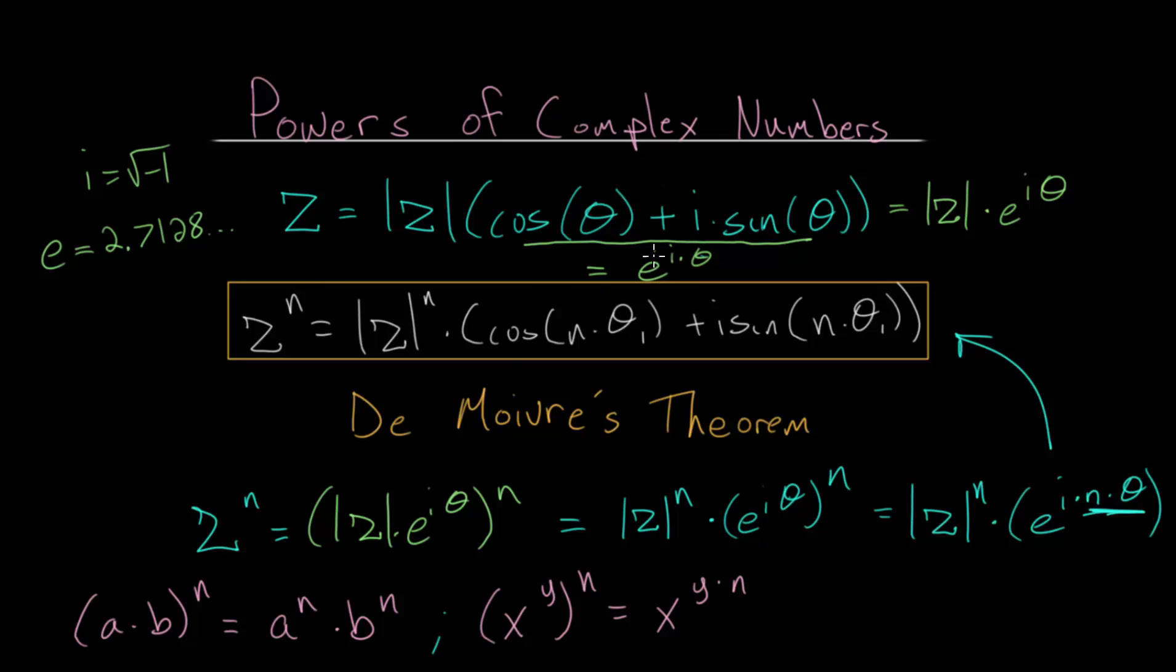And this right here is equivalent to this. Since in Euler's formula, it's i multiplied by the angle, and this right here is multiplied by i, so that means this must be our angle.